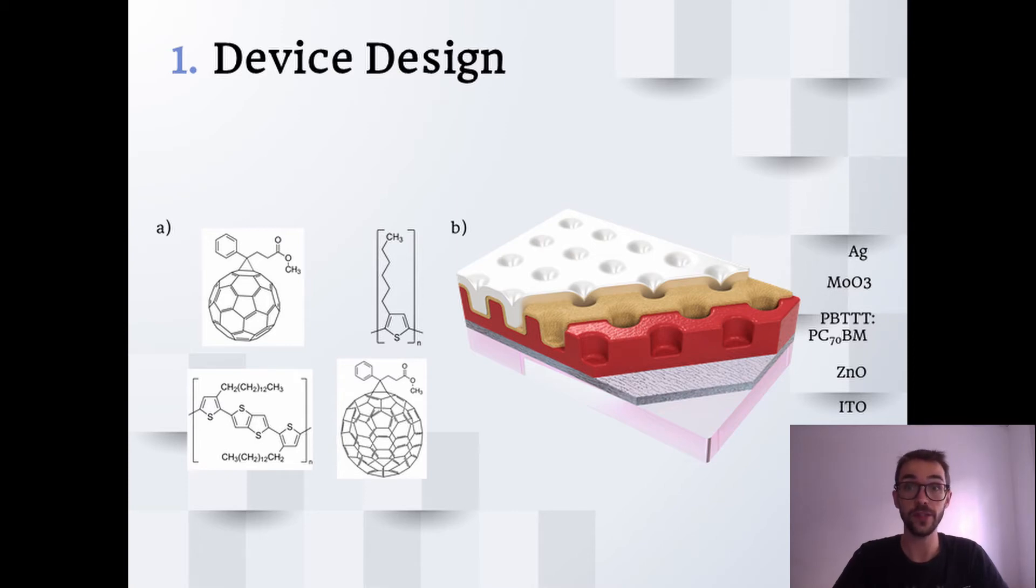The first thing we did was to design the device and choose the active layer materials. We decided to use P3HT-PC61BM because it's one of the most studied materials in organic photodetectors and solar cells, and also PVTTT-PC71BM because it has a very long charge transfer state absorption tail.